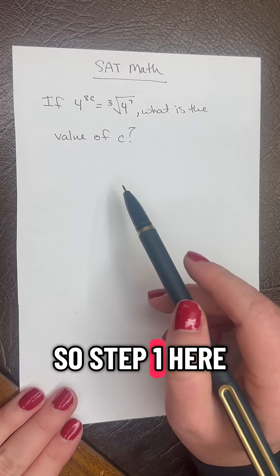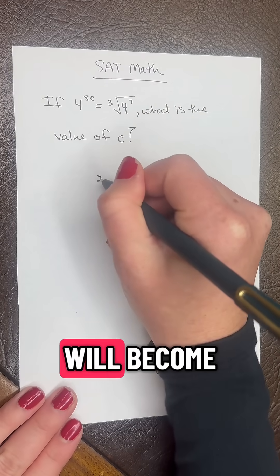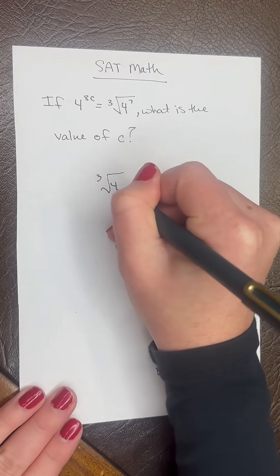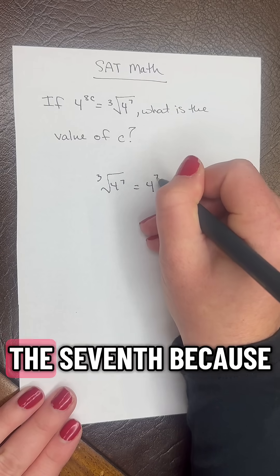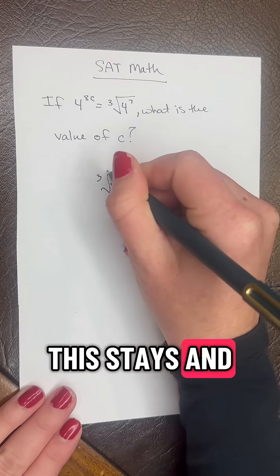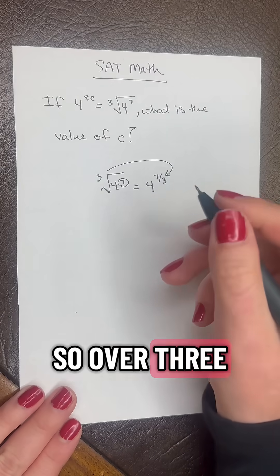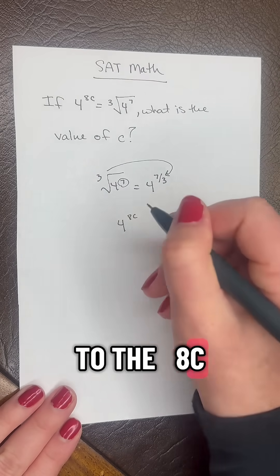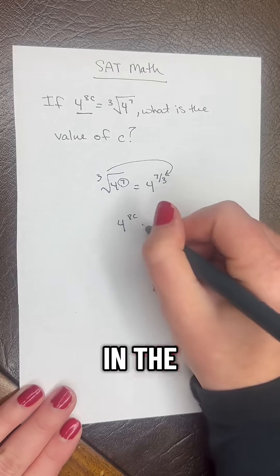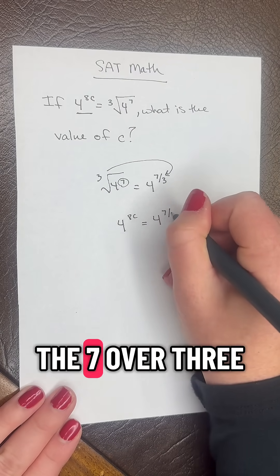So step one here, we need to rewrite the cube root as an exponent. So that will become 4 raised to the 7 over 3. Now our equation will become 4 to the 8c, I'm getting that from right here in the original problem, equals 4 to the 7 over 3.